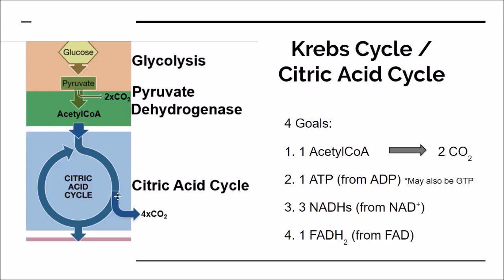It then goes through the Krebs cycle, where you basically create some intermediates, make some products, remove some molecules, and then ultimately you recreate oxaloacetate, which can then restart the reaction again. Let's look at some of the goals and important aspects of the Krebs cycle.